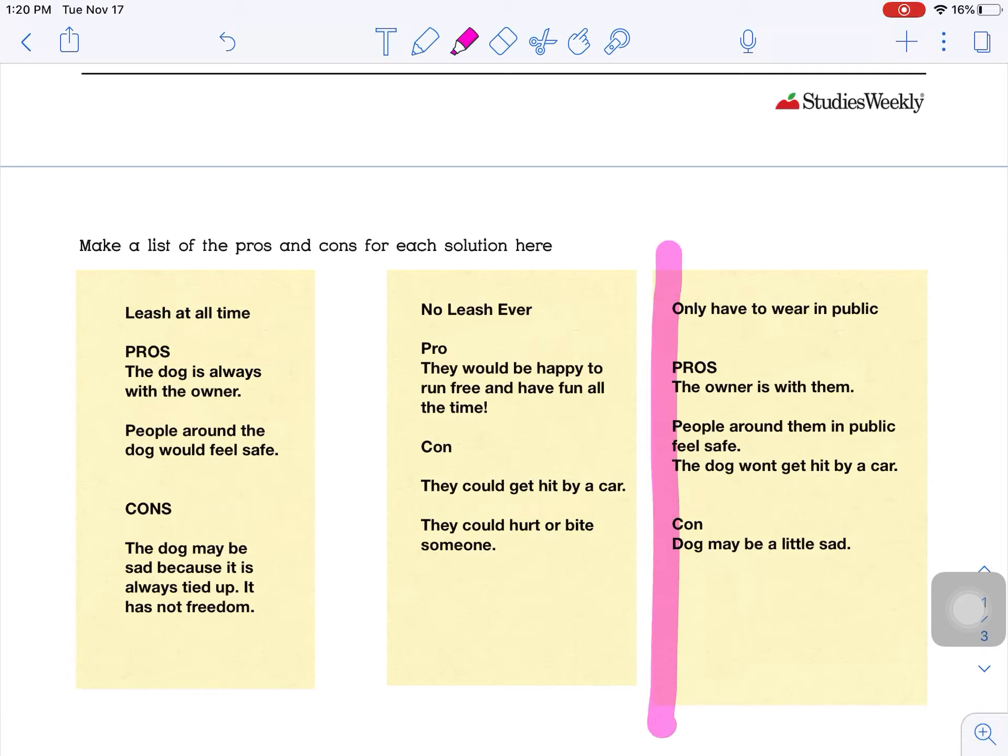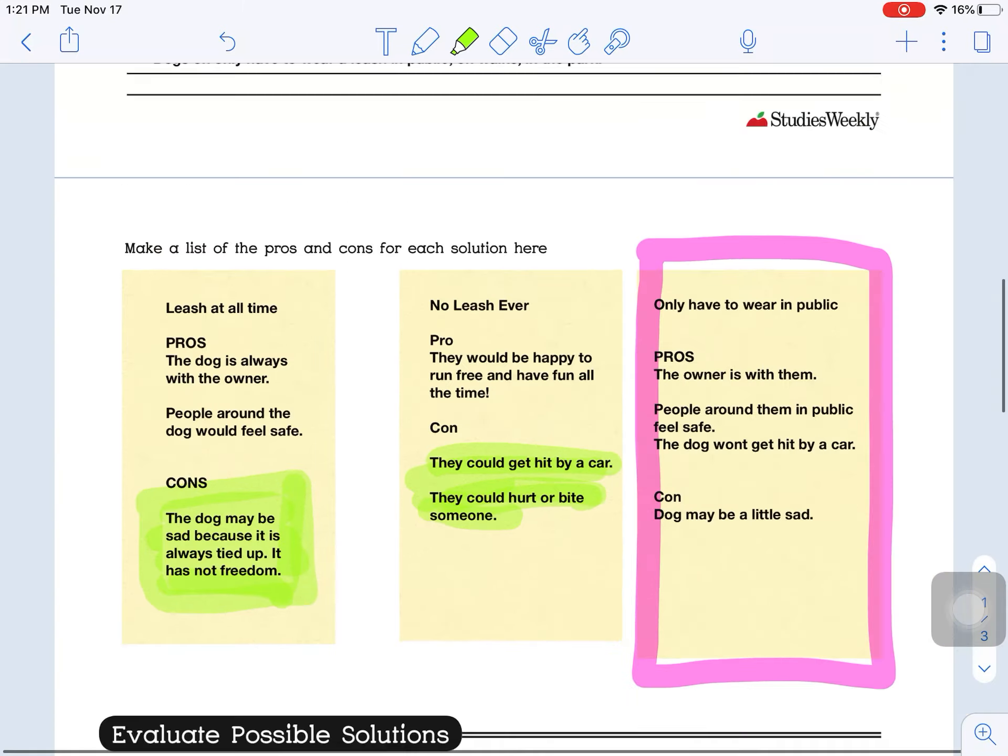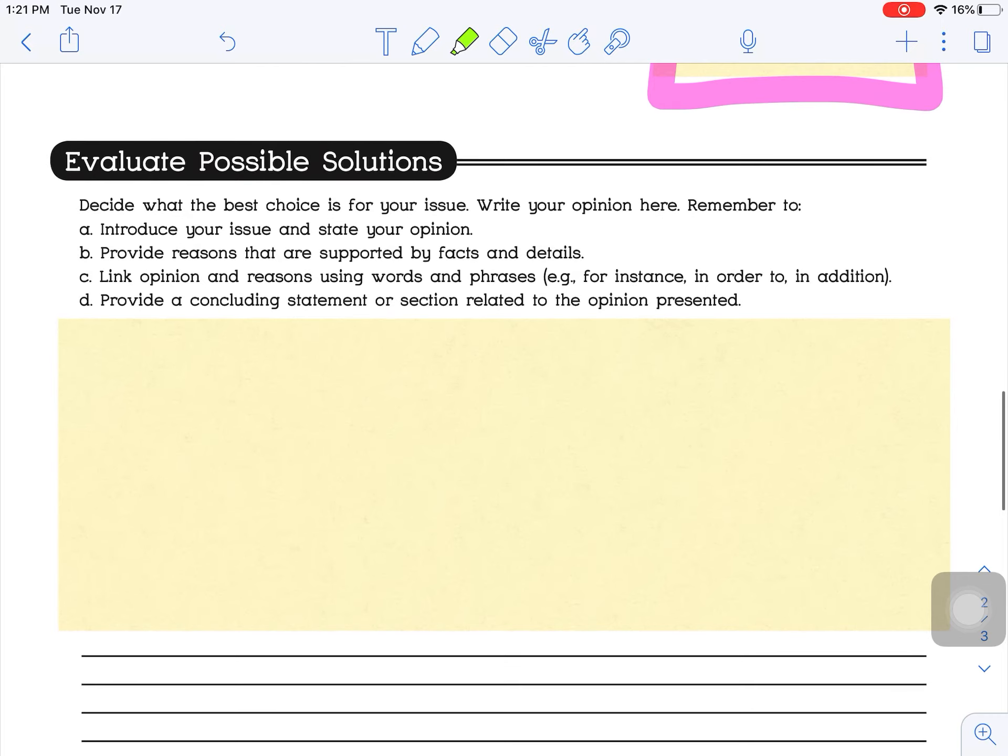My opinion would be this one right here, only have to wear a leash in public. Because our cons are more severe in our other options. And I'm going to highlight those. So they could hurt someone or bite someone. They could get hit by a car, which is scary. They could be sad because they're always tied up. So those cons are a little worse than the dog might be a little sad. Because it's only going to be tied up for a little bit, where in our first example over here, they are tied up all the time. So that's why I'm deciding with only have to wear it in public. Now that I have my stance, which is what opinion I have decided on, and I have my research done, I have opinions from my community and the internet, now I'm going to go in and start writing here.